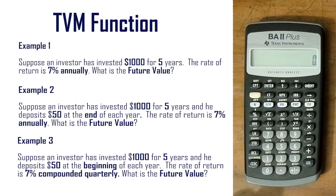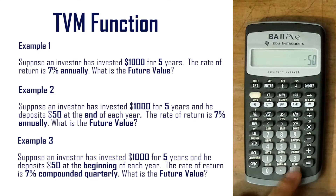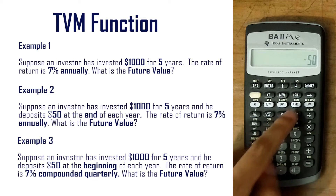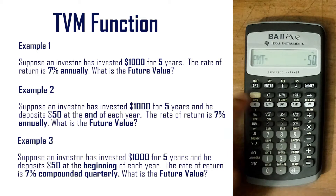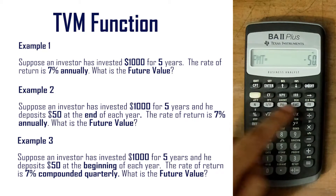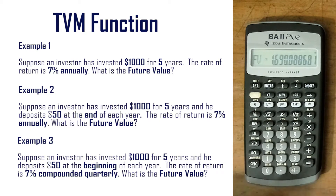In Example 2, the investor also deposits $50 at the end of each year. Therefore we input 50 as a negative value in PMT, then press CPT then FV, which gives us the result 1690.